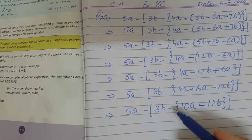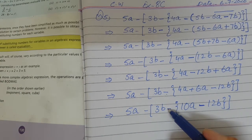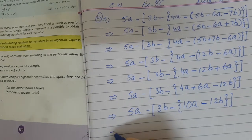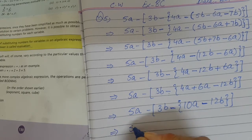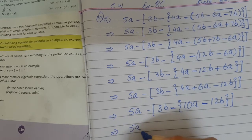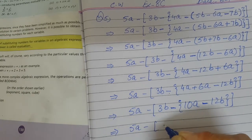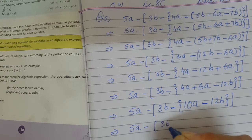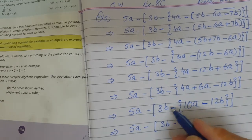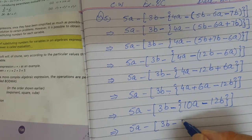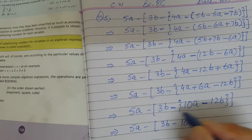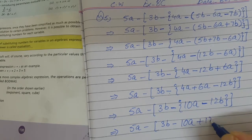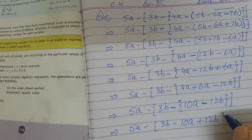Now in the next step we will remove these braces with the outer sign, which is negative. Remember: when the outer sign is negative, all terms inside alter their signs. Plus becomes minus, and minus minus becomes plus 12b.